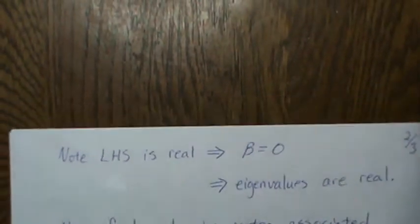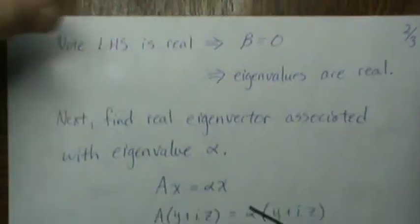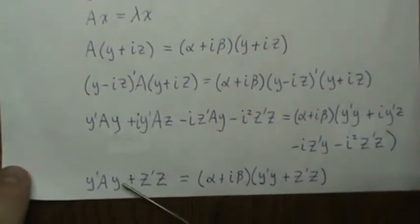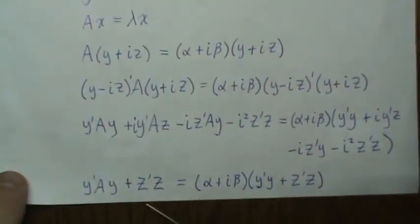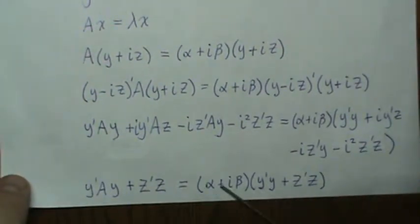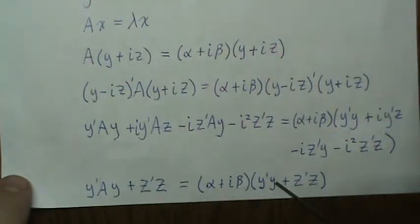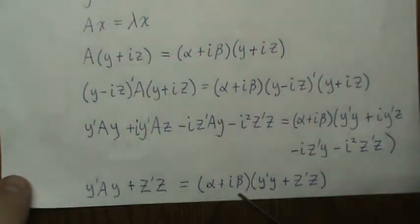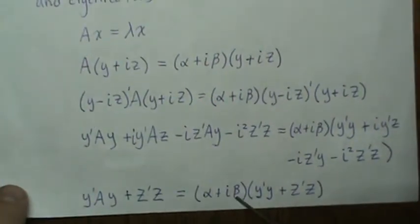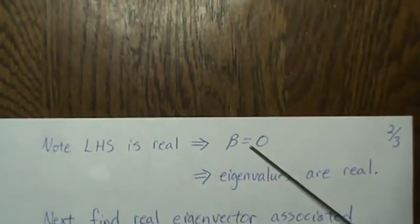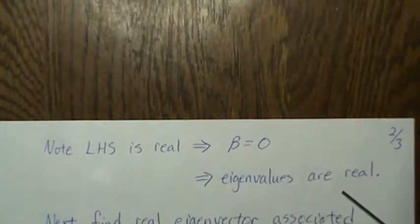So then if we note that the left hand side is real, and if we look at that there's nothing complex on this side here, that means this side has to be real. They have to equal, and if this side is real the only complex number or part is this, so that implies that the beta has to be zero. And if the beta is zero that means the eigenvalues are real.